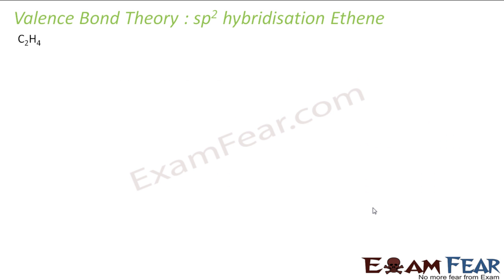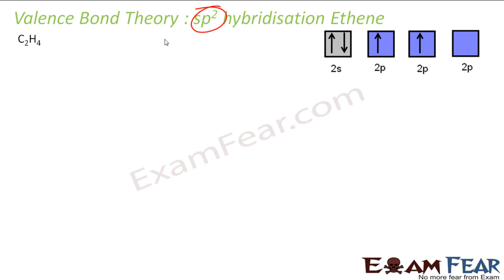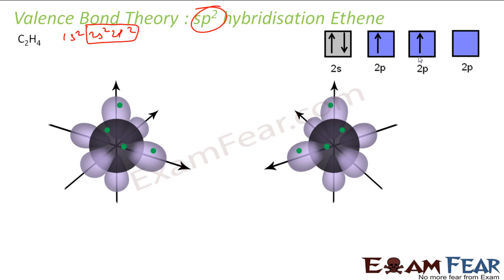Let's take the ethene molecule now. In ethene, I have sp2 hybridization. For carbon, the electronic configuration is 1s2 2s2 2p2. I'll take the outermost shell: 2s2 2p2. I have two carbon atoms both in the same form — 2s2 2p2 and 2s2 2p2.